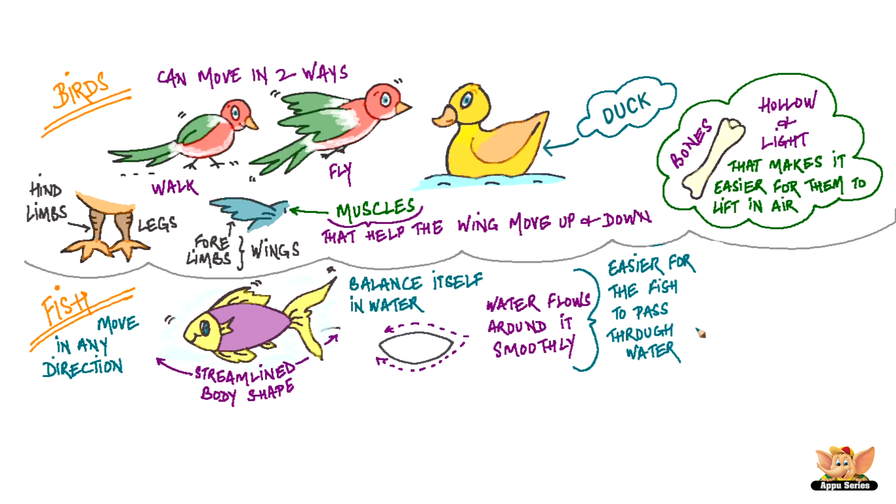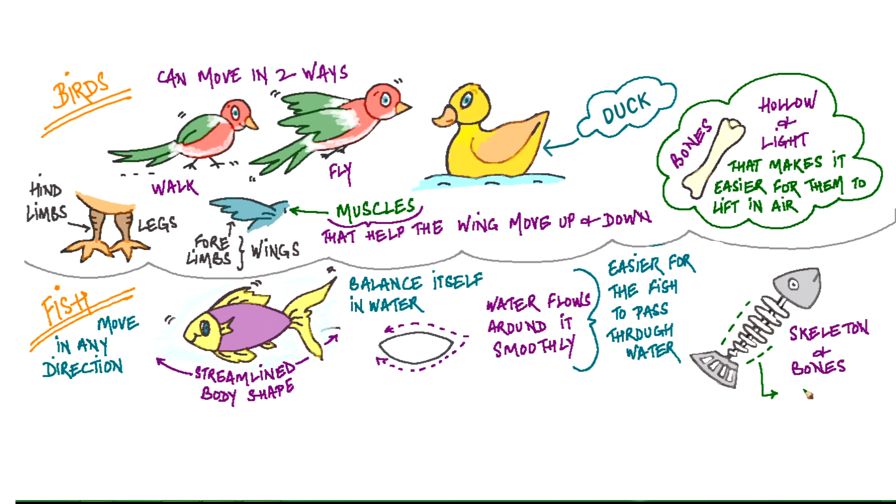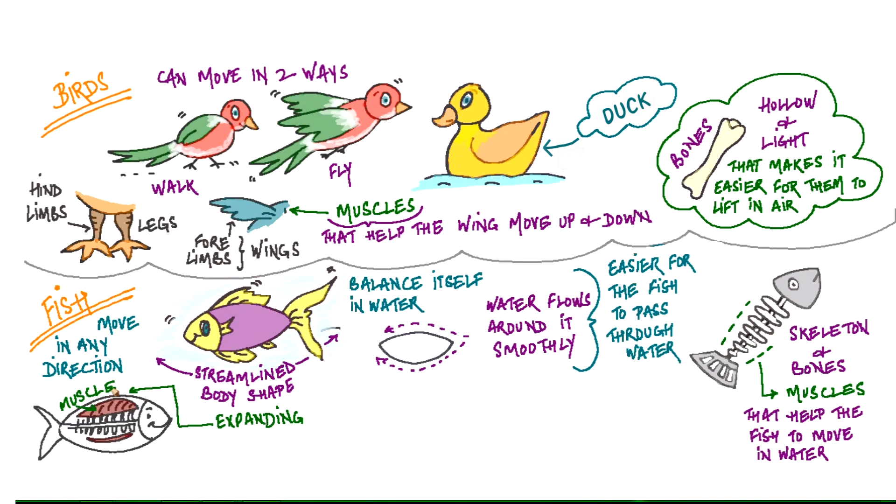Unlike the earthworm, snail and cockroach, the fish has a proper skeleton and bones. There are strong muscles along the skeleton that help the fish to move in water. Fish also move by expanding the muscles on one side of their body while relaxing the muscles on the other side forming a curve. This process is repeated on the other side. A series of such moves make the fish move forward in water.